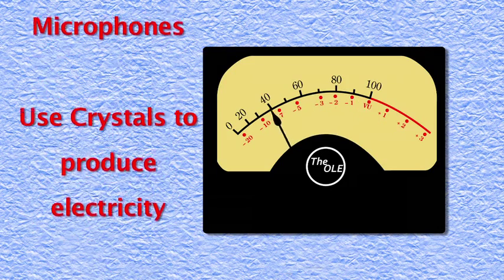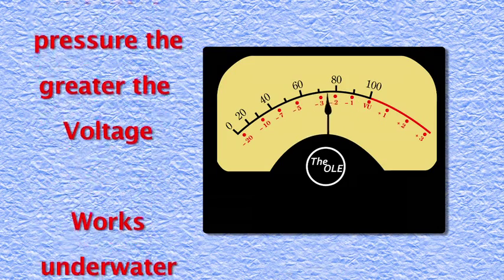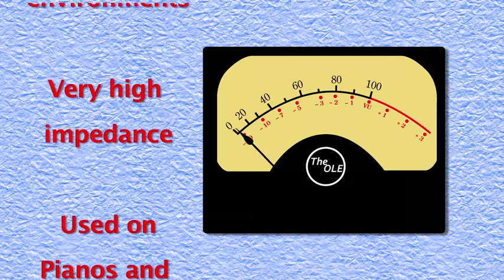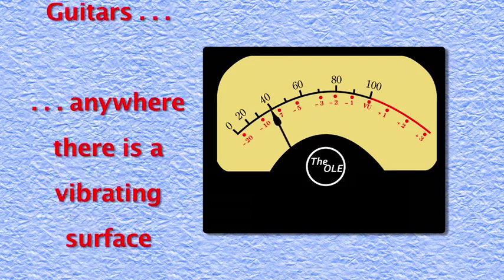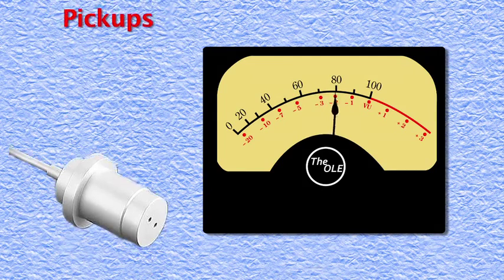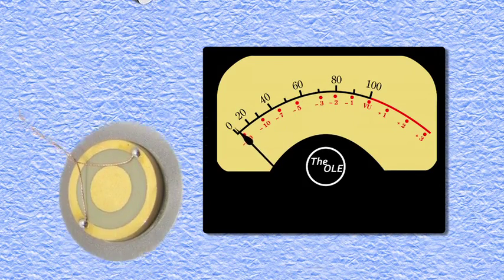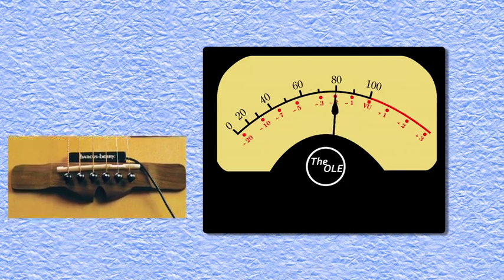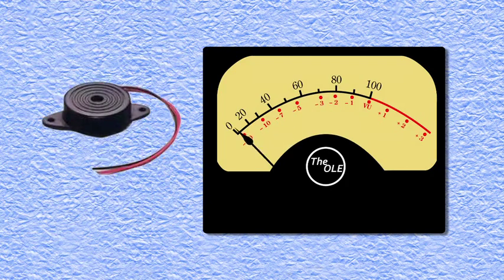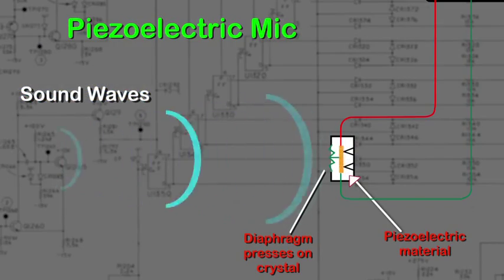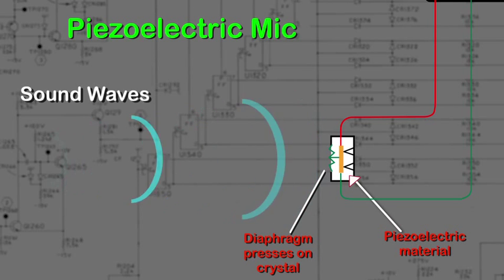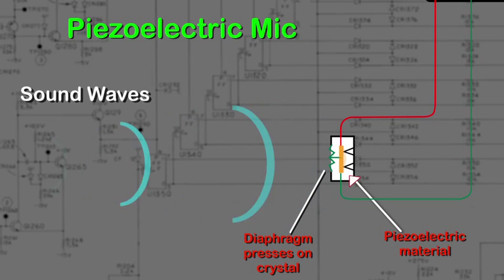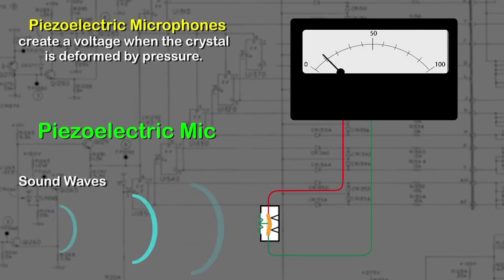Piezoelectric microphones work off the principle that certain crystals — piezoelectric elements — will give off a small amount of electricity when they are stressed. So when a piezoelectric material is pressed on or squeezed, it gives off a small amount of electricity. Piezoelectric microphones tend to be not as sensitive as other types and work best when they are attached to a sounding board, such as a piano's or a guitar's. Just as with other types of microphones, a piezoelectric microphone has a diaphragm which is moved by sound waves or vibrations. This is then transferred directly to the piezoelectric material, and as it is stressed, it creates a voltage and is turned into a sound source.